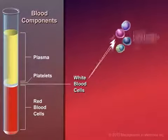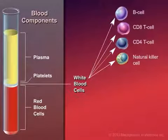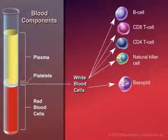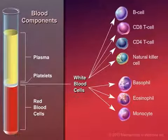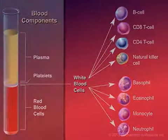The five major types of white blood cells are lymphocytes, or B cells and T cells, basophils, eosinophils, monocytes, and neutrophils.